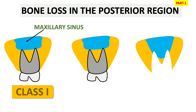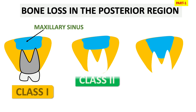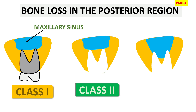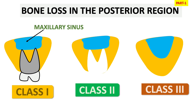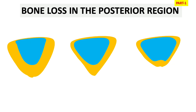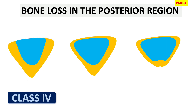Class 1 is dentate — just before extraction. Class 2 is immediately just after extraction; there is no obvious resorption in height and width of the bone or the ridge, but we cannot fabricate the denture in unhealed ridges. In Class 3 we have well-rounded form ridges with some resorption in height and width, and the ridge anatomy will not complicate denture construction — we can easily fabricate the denture in well-rounded form ridges.